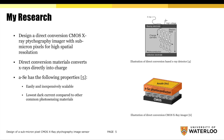The amorphous selenium layer is a direct conversion material which converts x-rays directly into charge, and it has multiple advantages including its scalability and low dark current compared to other common photosensing materials.